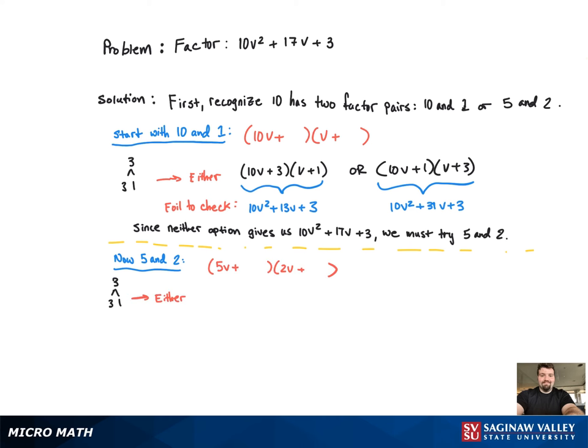And again, we know 3 only has one factor pair, so it's either going to be 5v plus 3 and 2v plus 1, or we flip-flop the 3 and the 1 again. And again, we have to FOIL to check.